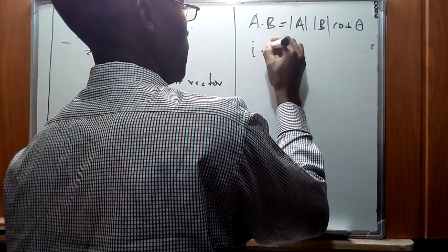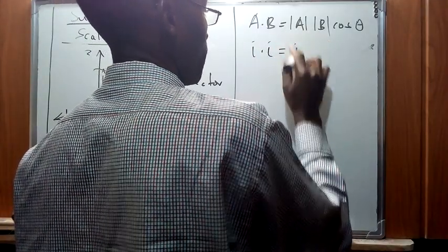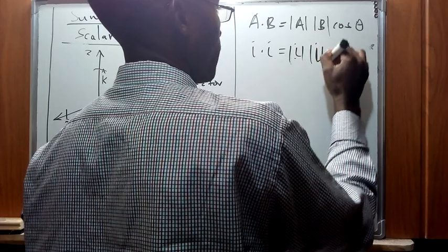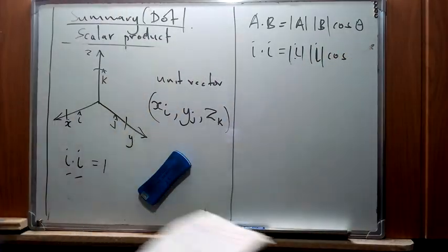...this is going to give us the modulus of i, the modulus of i, the cosine of theta. A vector that does not create an angle, so maybe let's give an illustration for that.